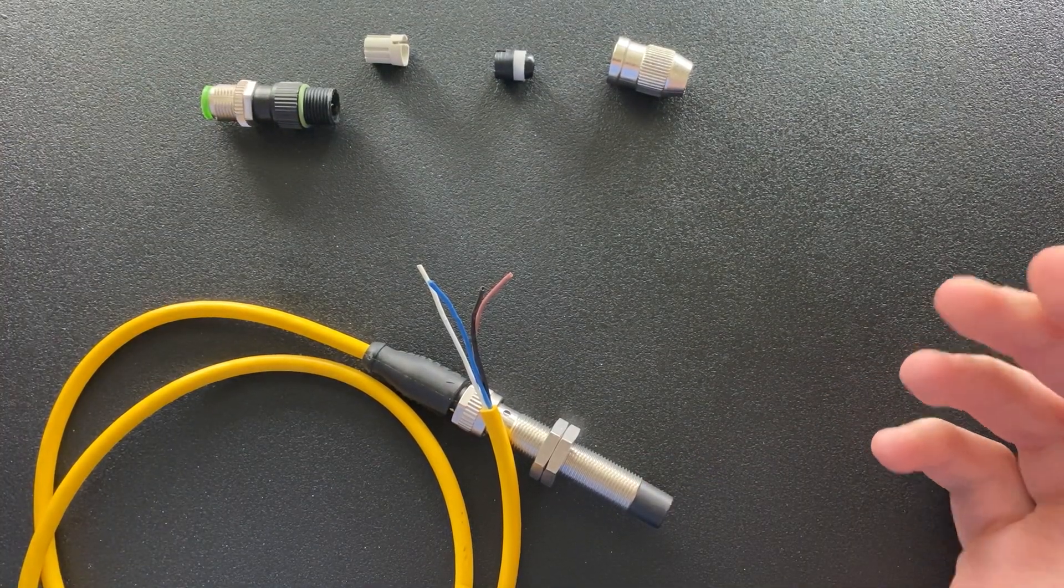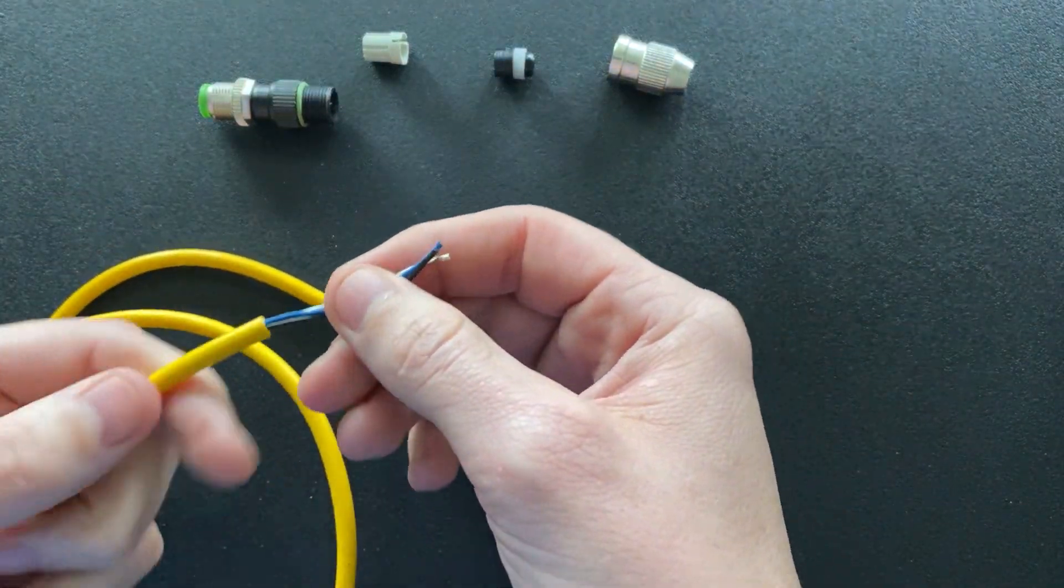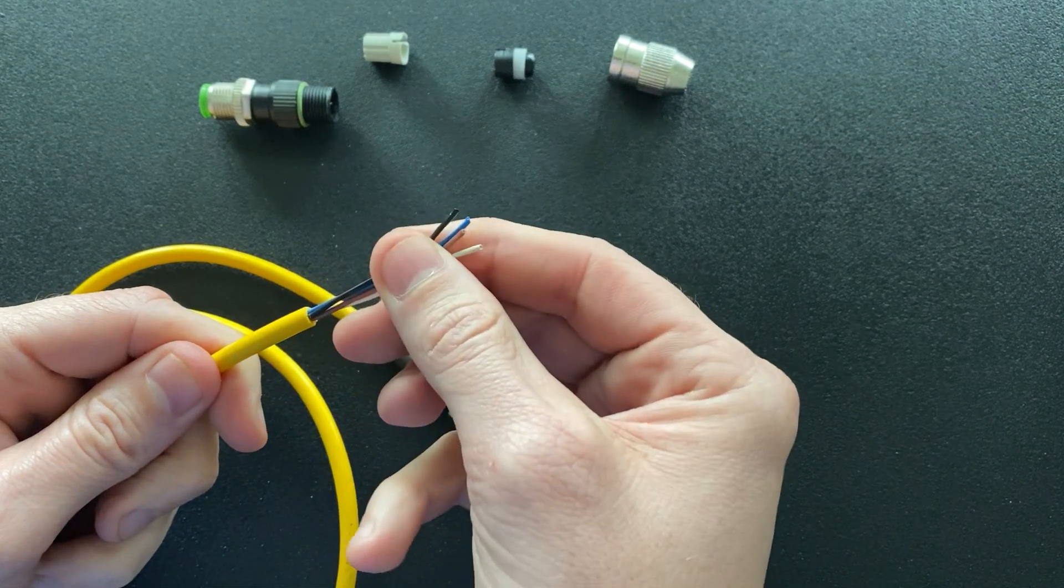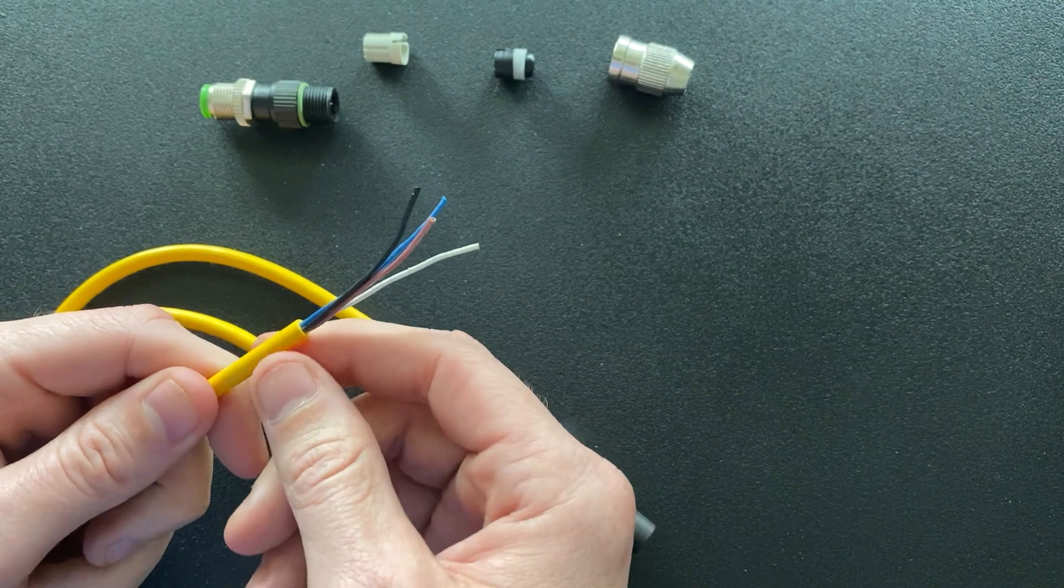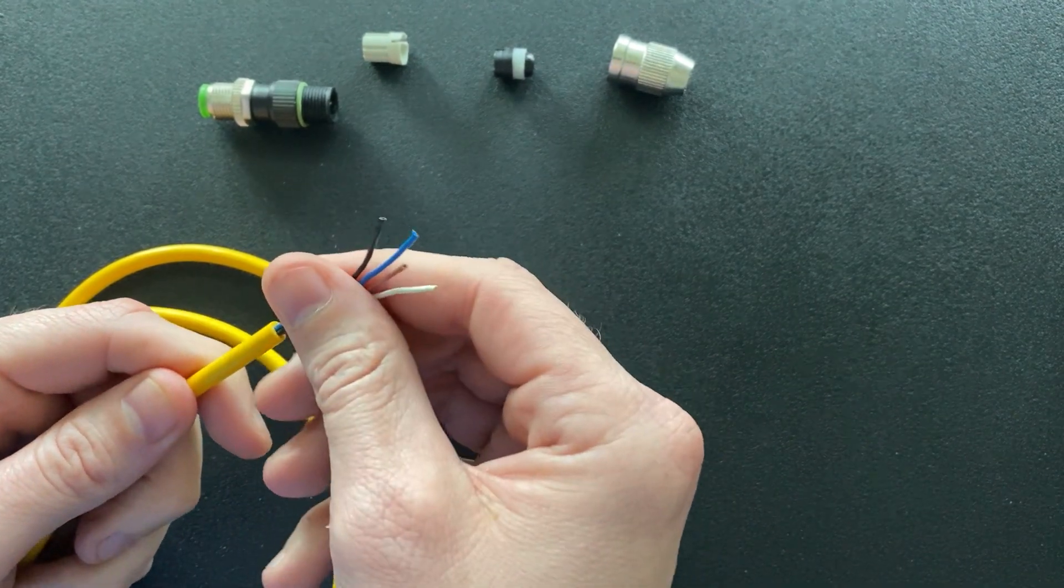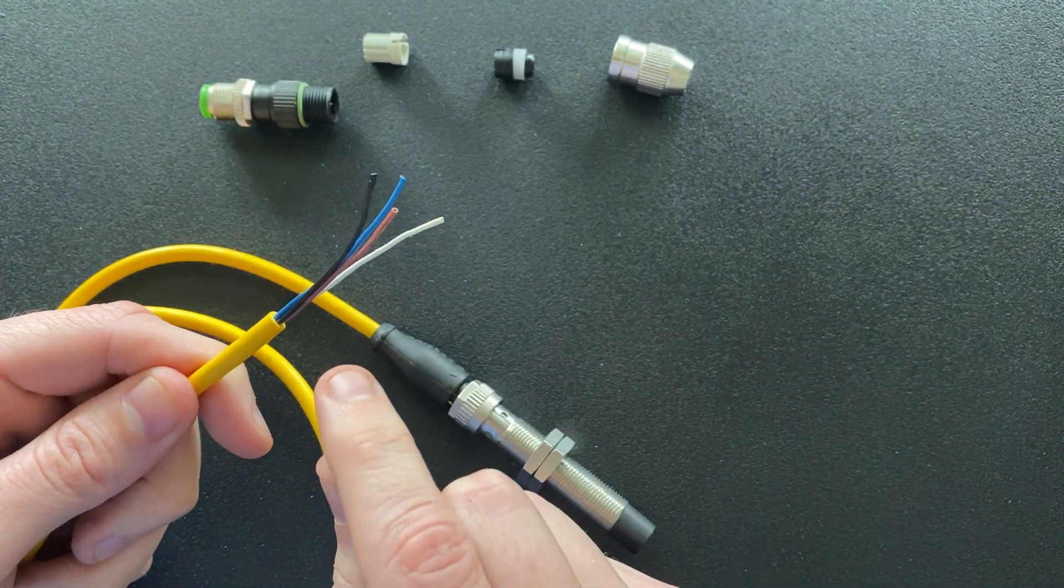They're really easy to install. First, you want to trim your cable jacket back a minimum of about 25 millimeters. I usually do it a little longer—it's easier to manipulate. But you want to leave the insulation cover on the interconductors; you don't want to strip that.